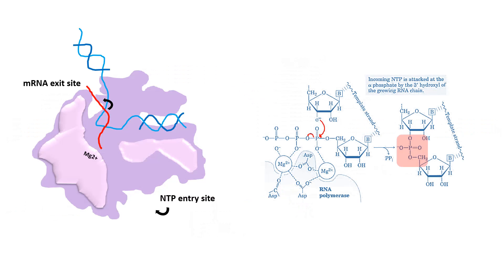If we zoom into the structural details of the RNA polymerase in bacteria — well known due to X-ray crystallographic structures — we can clearly see that in the beta and beta prime subunits there is an entry site for the untranscribed DNA. The helicase activity separates the strands, and in a magnesium-dependent manner the polymerization occurs. The specific catalysis involved is known as metal ion catalysis.